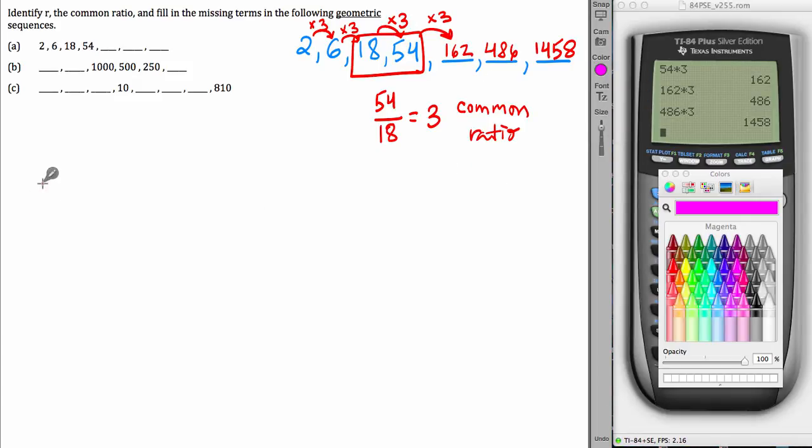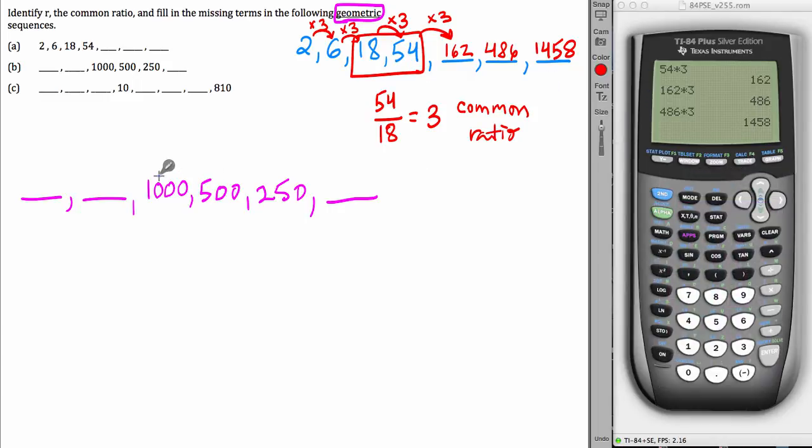Now, moving on to the second example, it starts out blank, blank, 1000, 500, 250, blank. Now, the directions say that this is a geometric sequence. So that must mean we can use the same idea we talked about in the previous example. Take two adjacent terms,